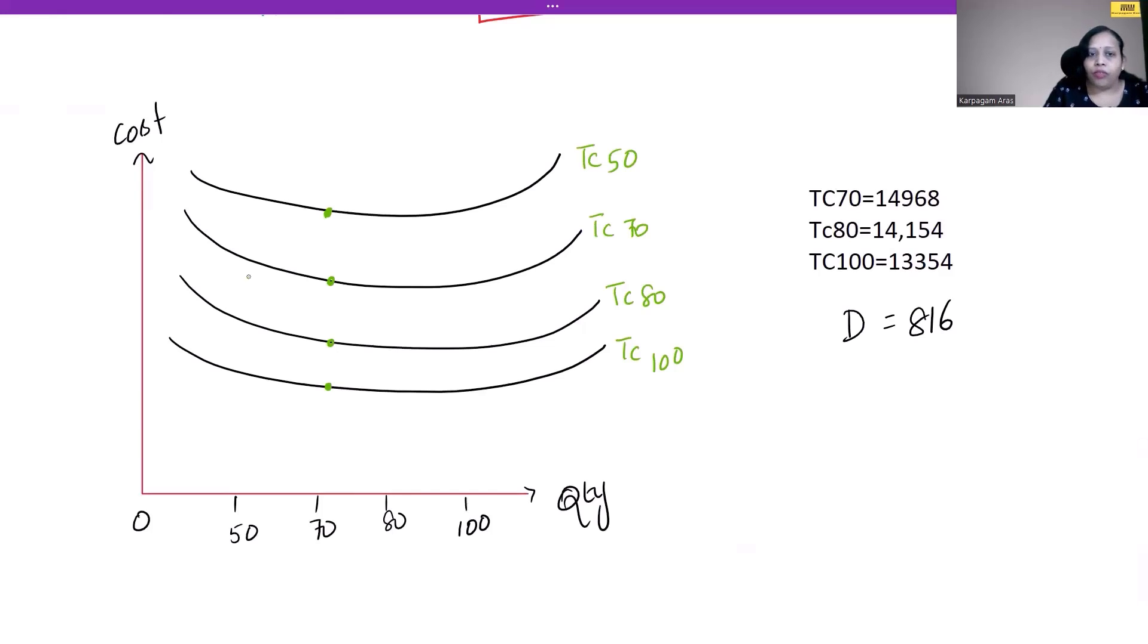So for all points, the economic order quantity stands at 70. But when we talk about cost, should we order a minimum of 50, 70, 80, or 100 is the question. The minimum order quantity—we could see TC at 70 is 14,978. Let this point be there. TC at 80, the cost is slightly coming down from this specific level. TC at 100, it has further come down to around 13,000.